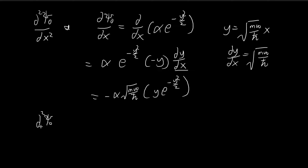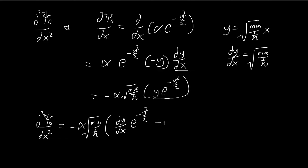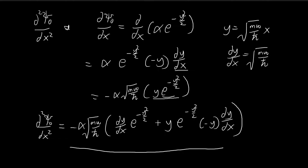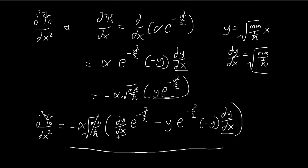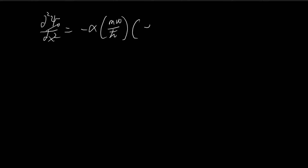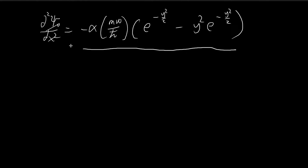Now we're going to take the second derivative. We pull out the constants, and then differentiate using the product rule. Differentiating y gives dy/dx times e to the power of negative y-squared over 2; then we retain y and differentiate the exponential term using the chain rule. After simplifying and pulling out dy/dx as a common constant, the second derivative of psi naught equals negative alpha m omega divided by h-bar, multiplied by e to the power of negative y-squared over 2 minus y-squared times e to the power of negative y-squared over 2.